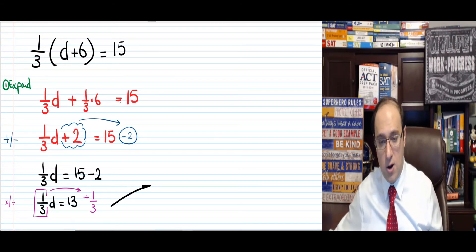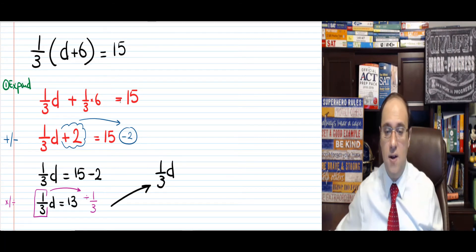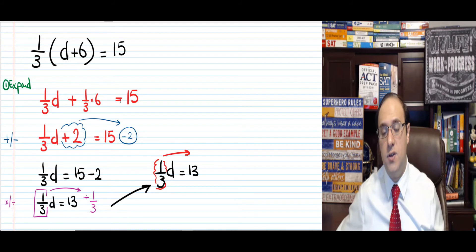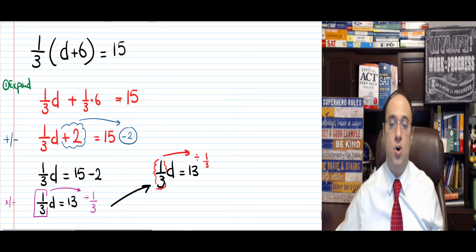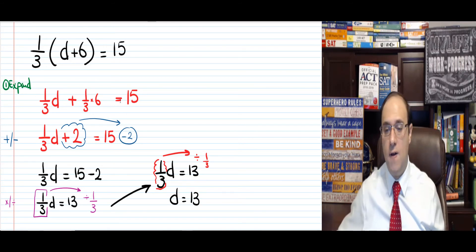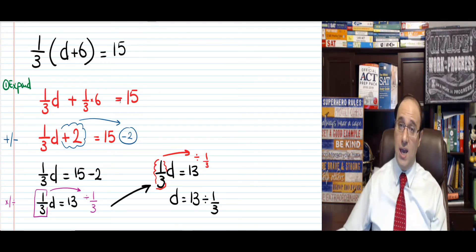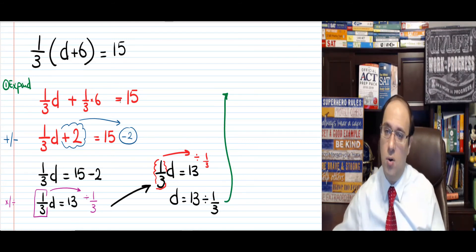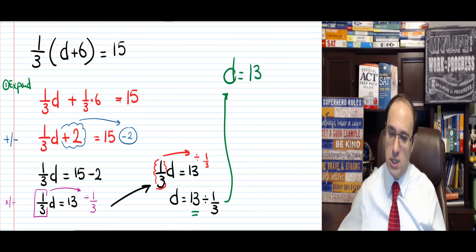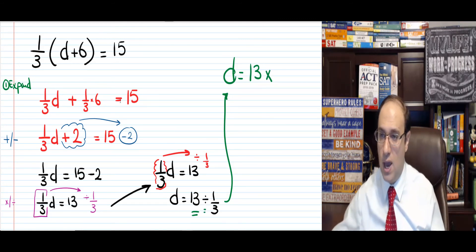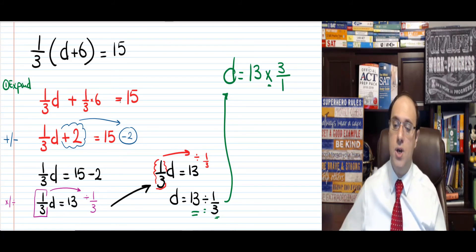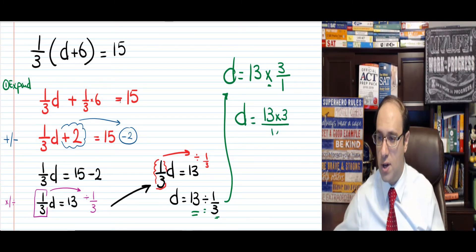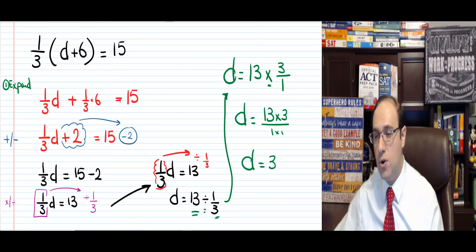Now rewrite: 1/3 d equals 13. We said we're going to move the 1 over 3 to the other side — it was multiplied on the left, so it goes as division. So d equals 13 divided by 1 over 3. When we want to divide by a fraction, here's what we do: d equals the first number, which is 13, change the division to multiplication, and then flip your fraction — the reciprocal. So instead of 1 over 3, it's 3 over 1. So d equals 13 times 3 over 1, times 1 — since 13 is 13 over 1. 13 times 3 is 39.